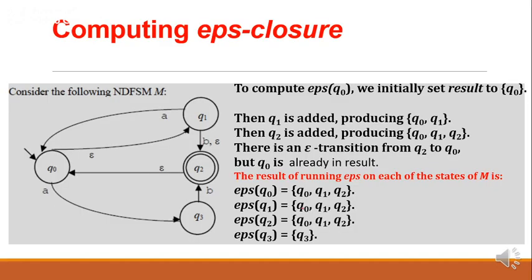Now, the next first step will understand how to compute epsilon closure. Epsilon closure, as I mentioned previously, is used to handle the epsilon transitions that are present in the system, which are not allowed — that is, epsilons are not allowed in the DFSM. Now, let me find the epsilon closure for all the states that are present.